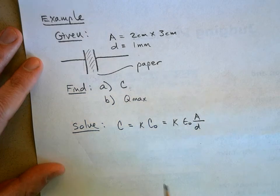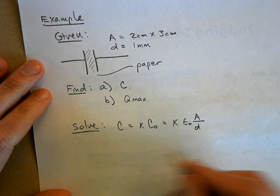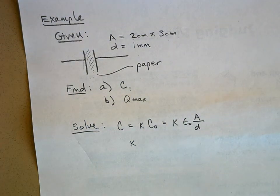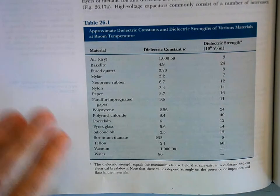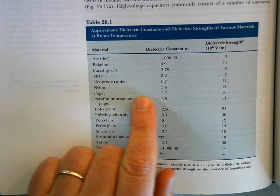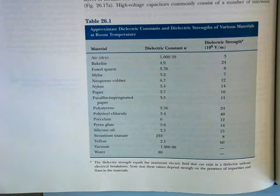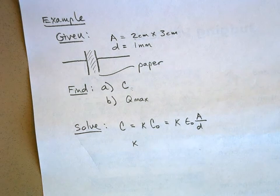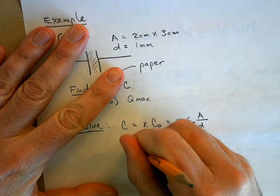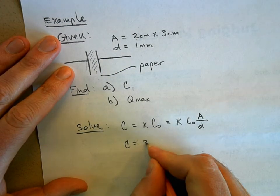Okay, and so we can now figure out the capacitance. First let's look up kappa. Here's my table that we're using and for paper the dielectric strength is 3.7. So that's what we'll use. So this is going to be, and I want you guys to help me out here, let's just plug all the numbers in. The capacitance is equal to 3.7.